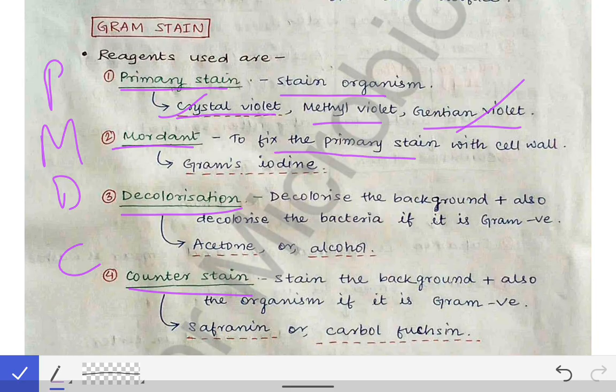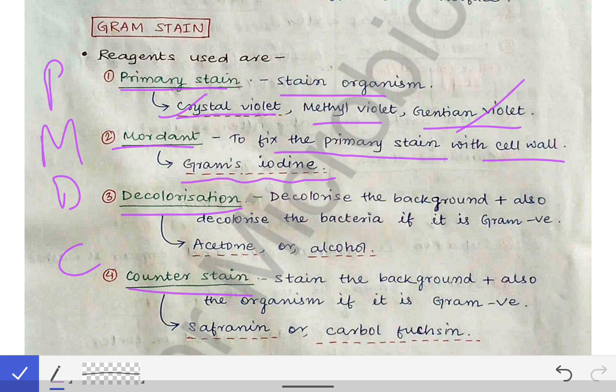The mordant's basic function is to fix the primary stain to the cell wall of the bacteria. The mordant we use universally is Gram's iodine. Gram's iodine helps in fixing the primary stain to the cell wall of the bacteria.